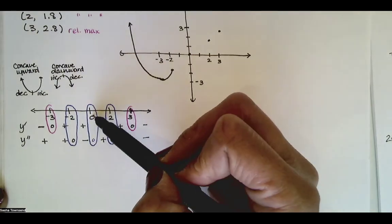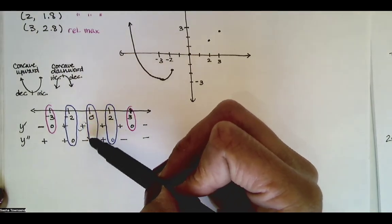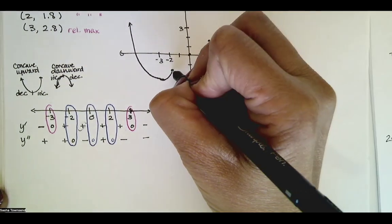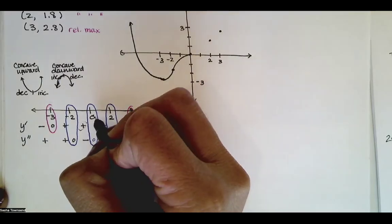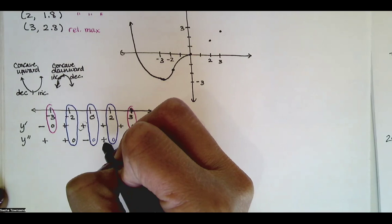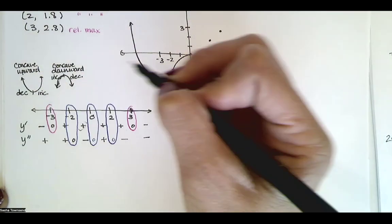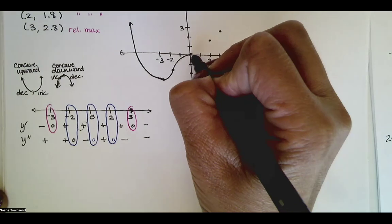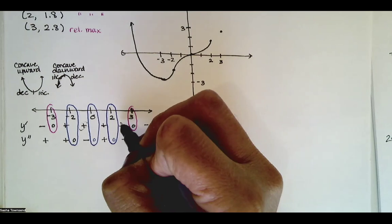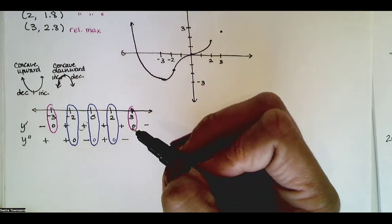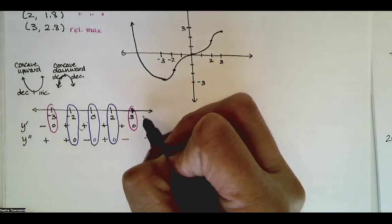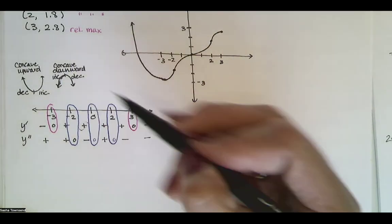From negative two to zero, the graph is increasing and concave downward, so I draw something that looks roughly like that. Then from zero to two, the function is increasing and concave upward, so it's going up like that. And then on the interval from two to three, the function is increasing and concave downward. And then from three to infinity, it's decreasing and concave downward.